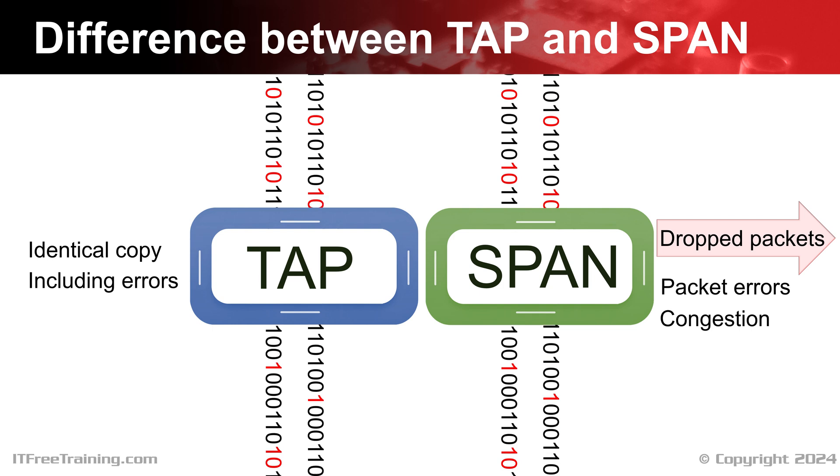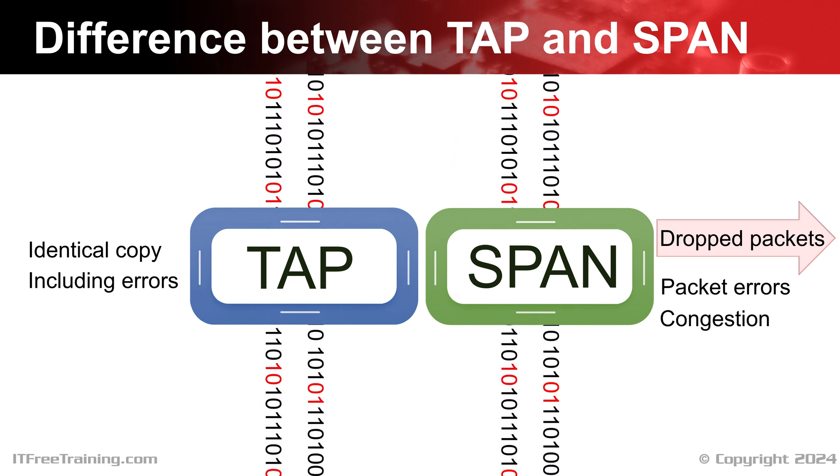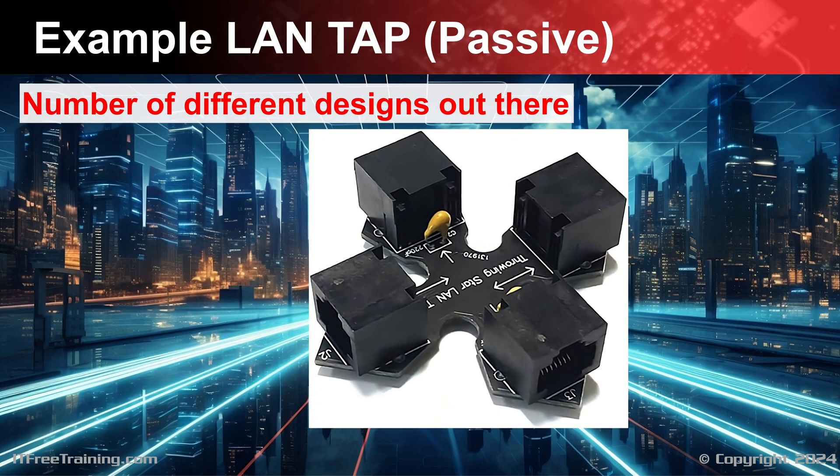If the switch is not congested and there are no packet errors, you should be getting an accurate representation of the traffic on the network. Let's explore an example of a passive LAN tap designed for twisted pair networks. These passive LAN taps feature a straightforward design, simple enough for a tech enthusiast to build, though they are also quite affordable to buy, so it may not be cost effective to construct one yourself. However, these basic LAN taps are limited to 100 megabits per second. To get higher speeds, you will need to use a more expensive active tap.